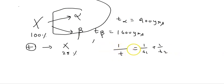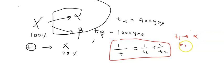t1 is the half-life of the first process, alpha decay. t2 is the half-life of the second process, beta decay. And t is the half-life of the equivalent process.